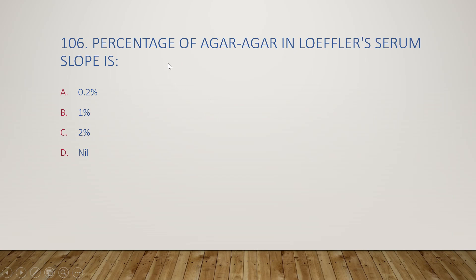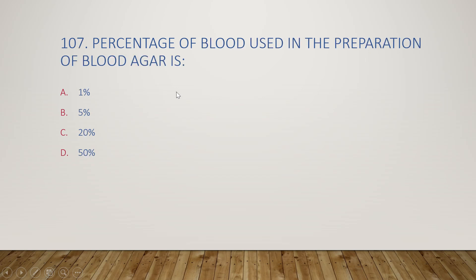Next question: the percentage of agar-agar in Loffler serum slope is 0.2%, 1%, 2%, or nil? The right answer is option D, nil. In Loffler serum slope, no agar is used.